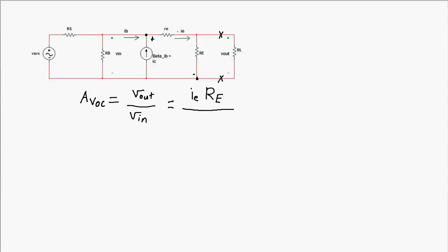Since emitter current IE appears in both numerator and denominator of the gain ratio, it cancels out, giving an open circuit voltage gain of RE / (re + RE). As long as the internal transistor resistance re is small compared to RE, this gain is close to 1, confirming that the open circuit voltage gain of the emitter follower is approximately 1.